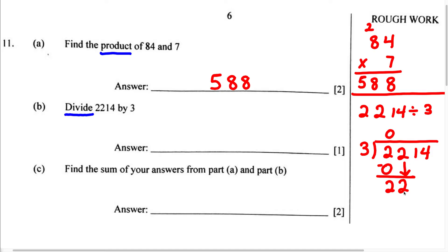Now 3 can go into 22 seven times. 3 times 7 is 21, and we subtract. 2 minus 1 is going to give us 1, 2 minus 2 is 0, so we're going to bring down this 1.